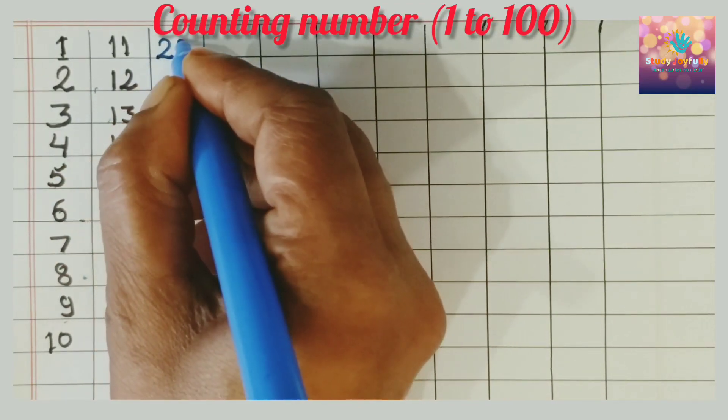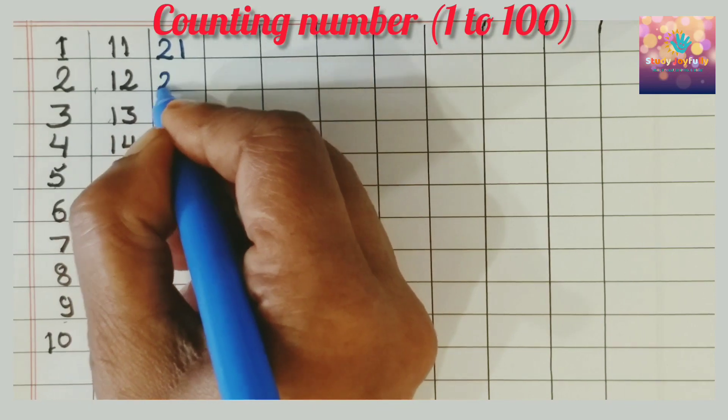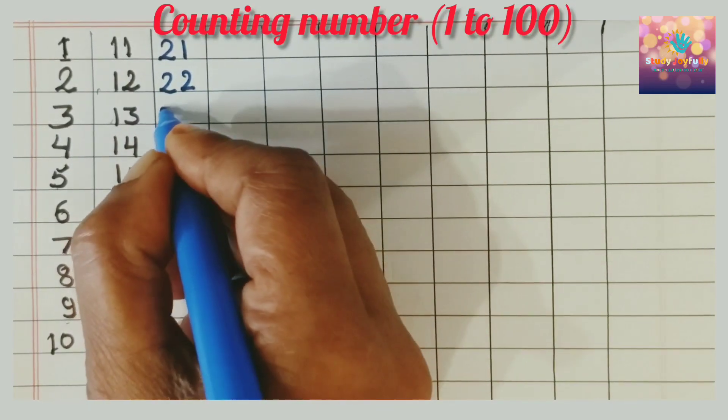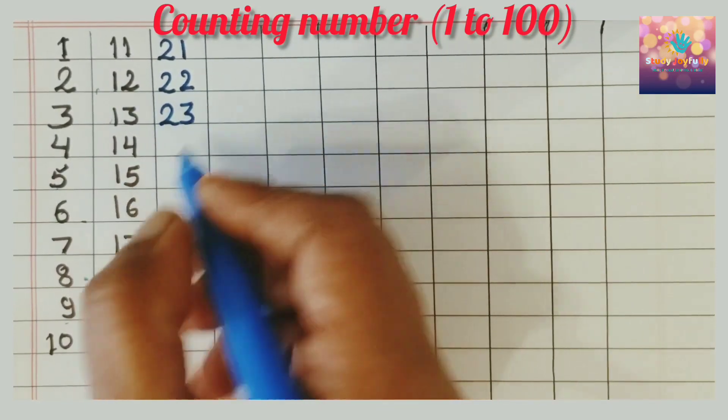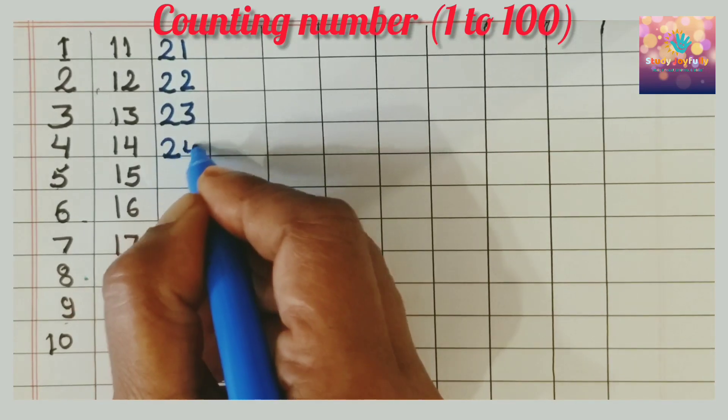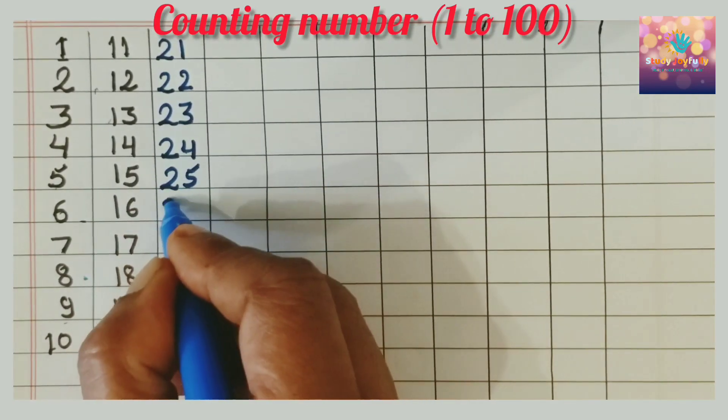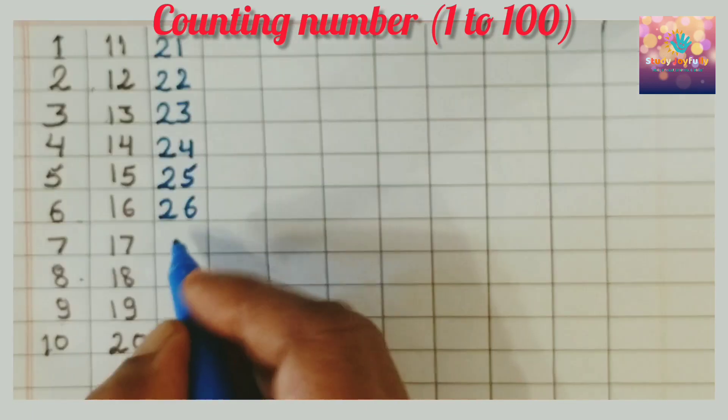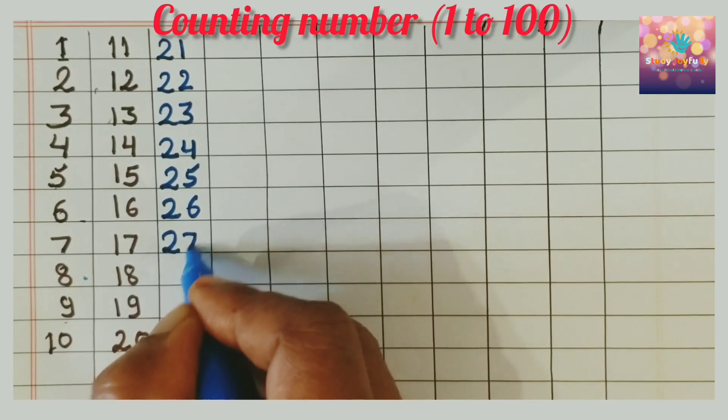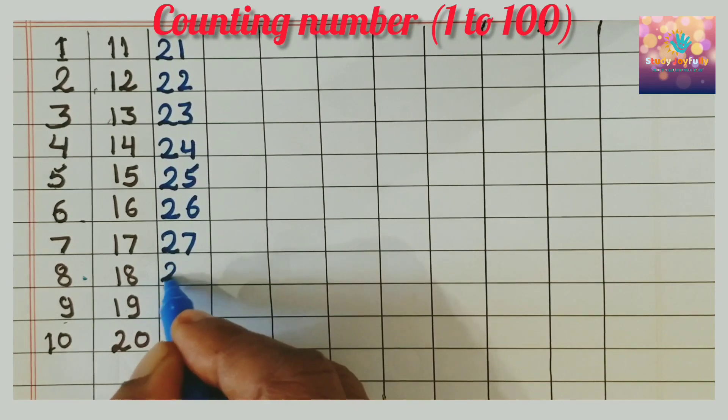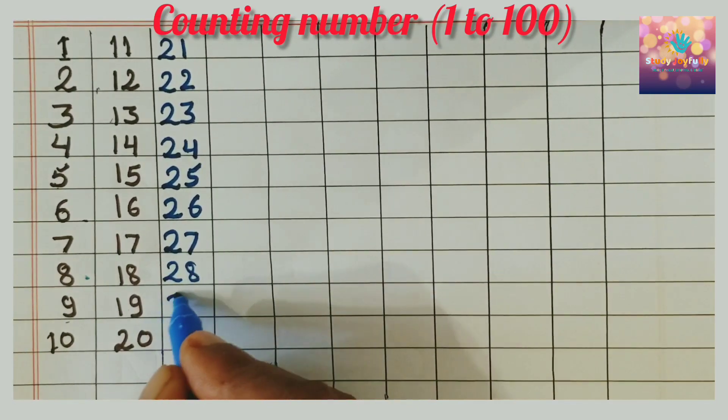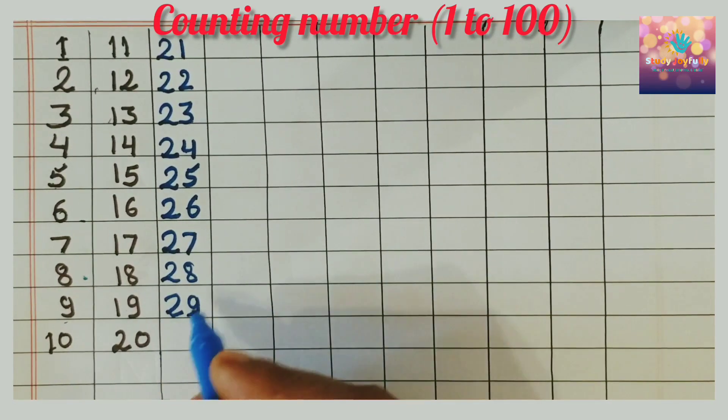2, 1, 21. 2, 2, 22. 2, 3, 23. 2, 4, 24. 2, 5, 25. 2, 6, 26. 2, 7, 27. 2, 8, 28. 2, 9, 29.